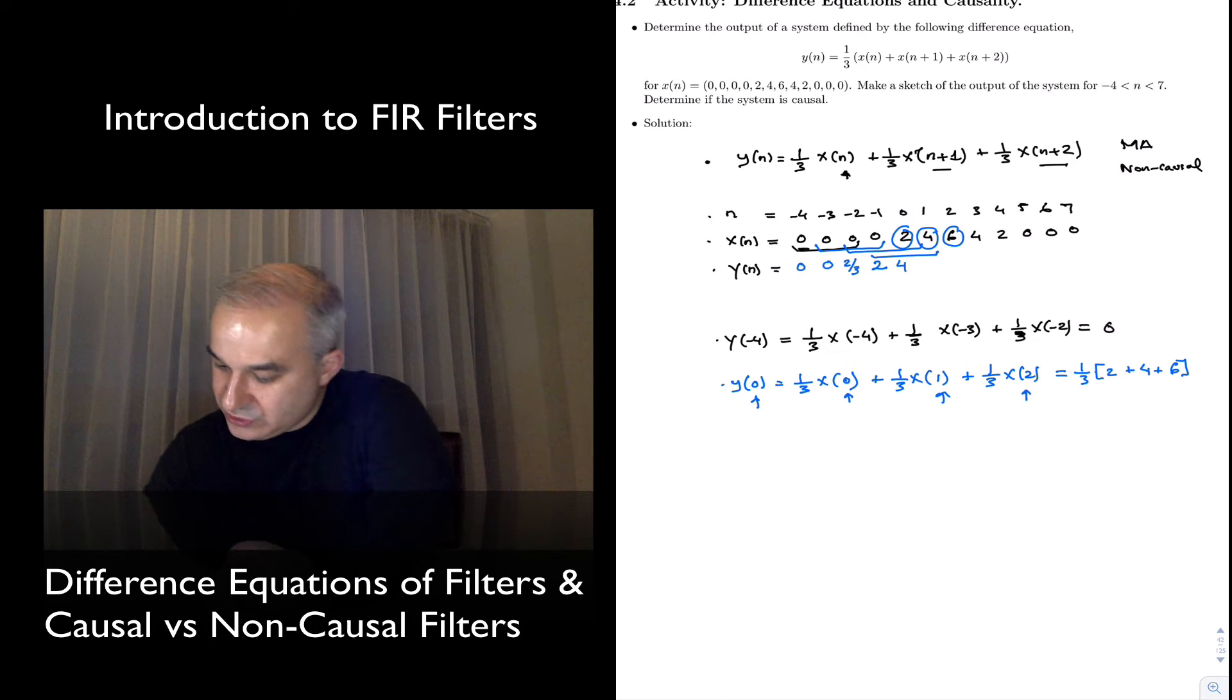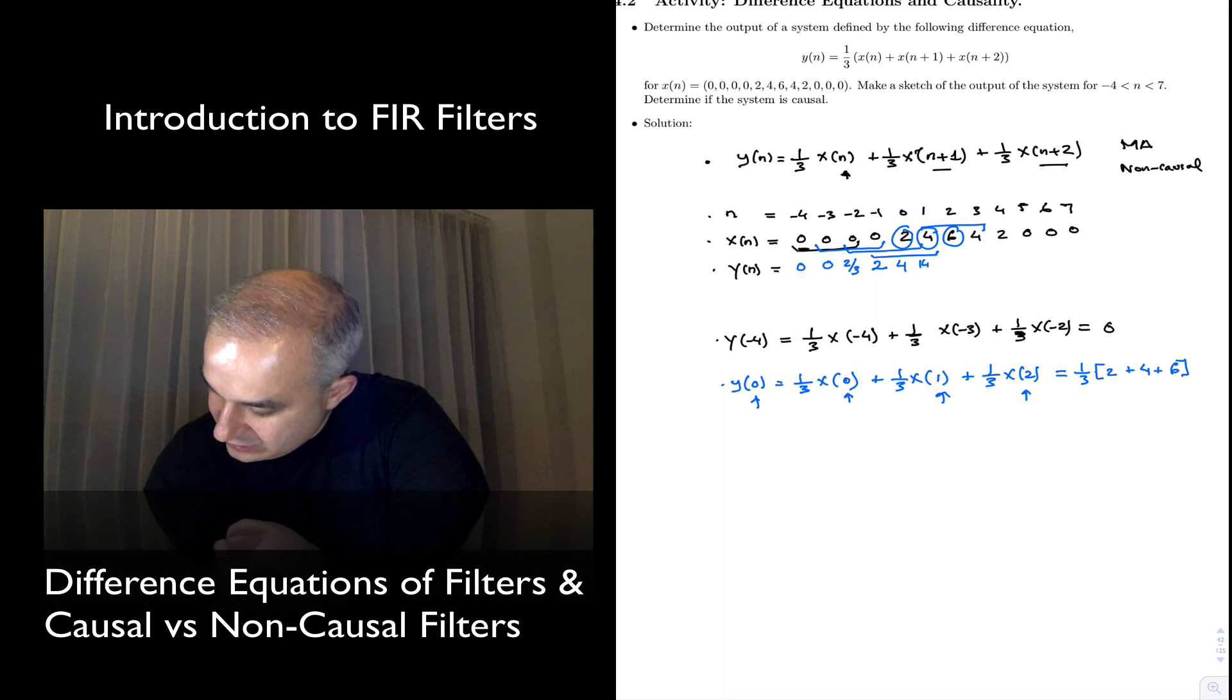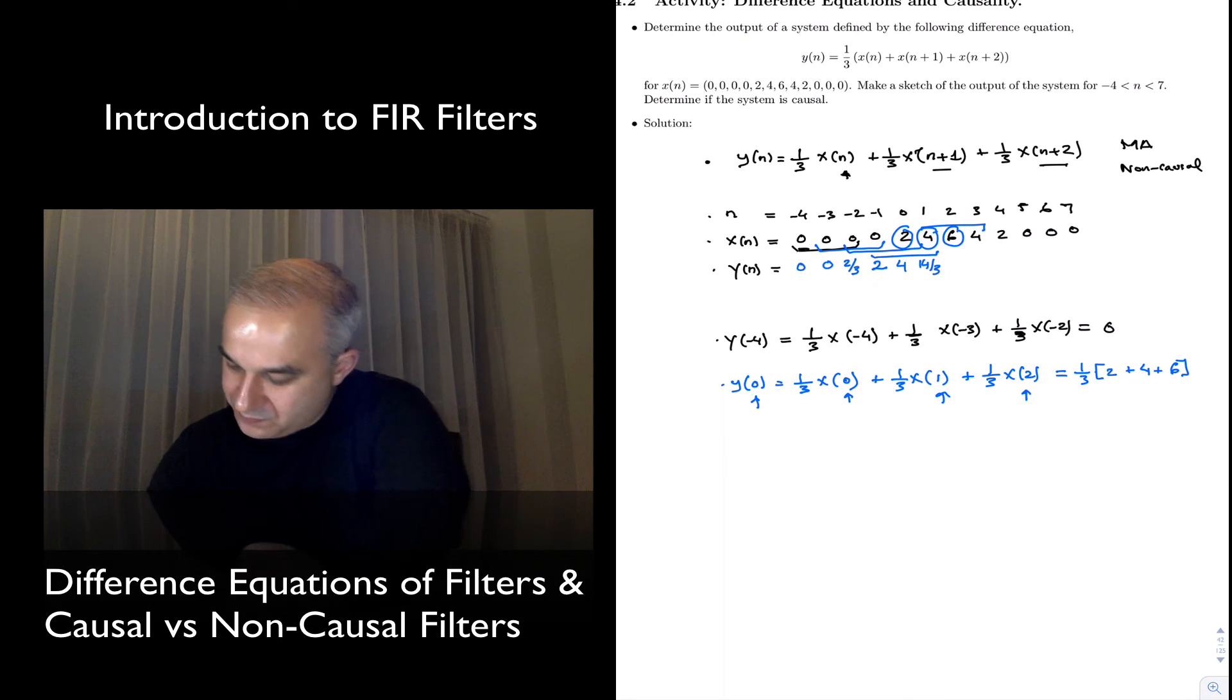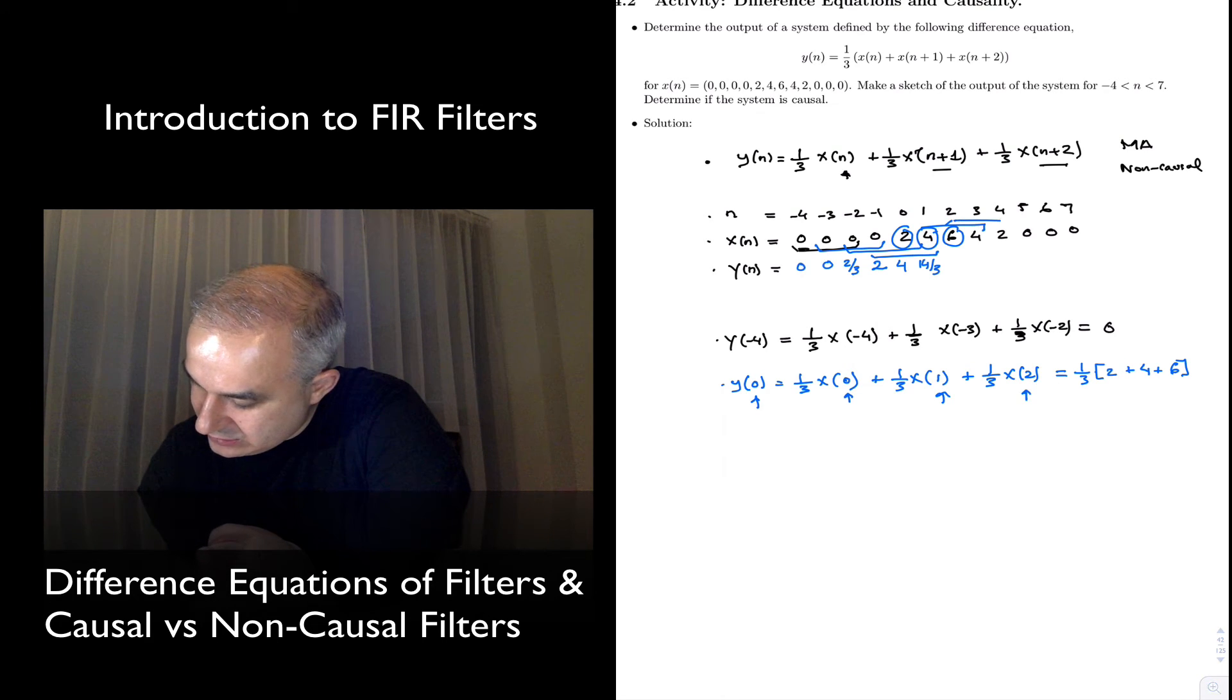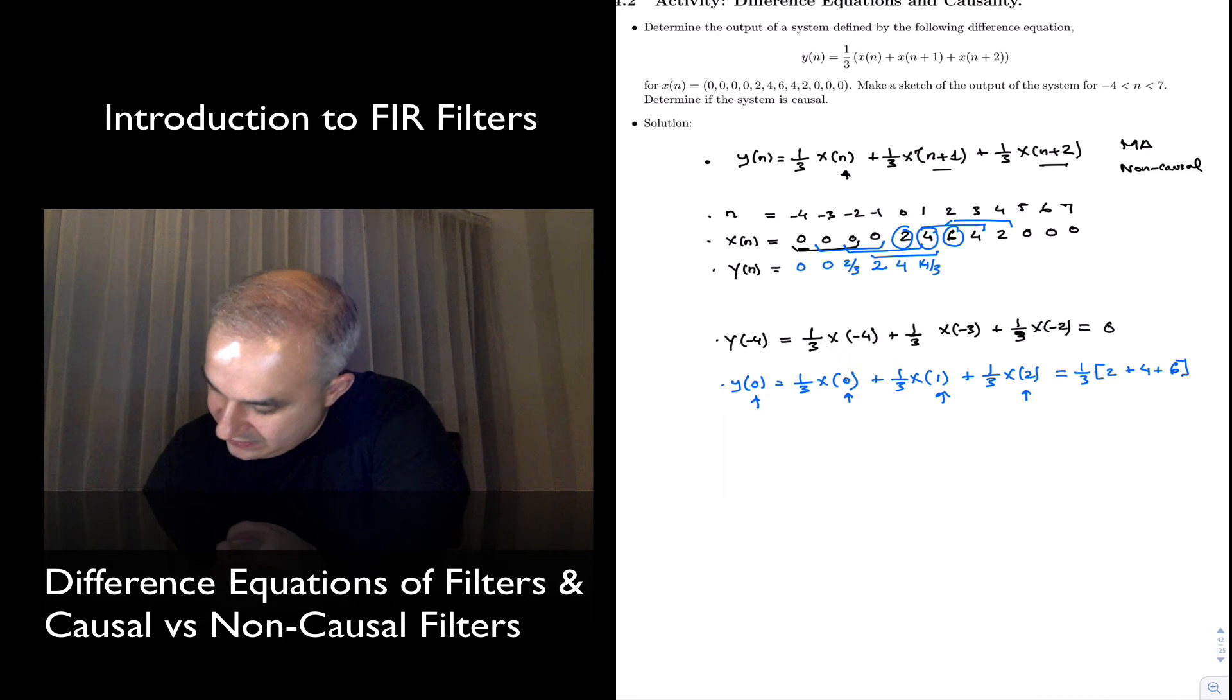This just continues. So, next, for x of 1, we have 14 over 3, or 4.6. Going forward, we have another 12 over 3, which is 4, here 6 over 3 is 2, then 2/3, 0, 0, 0.